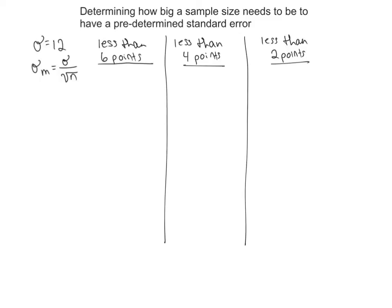In this video, I'm going to show you how to work backwards just a little bit. I'm going to show you with a given standard deviation how large of a sample would be necessary to have a standard error that's less than a certain number of points. We're going to see how big of a sample we need to get our standard error less than 6 points, 4 points, and 2 points. So let's start with 6 points first.